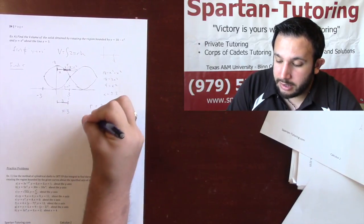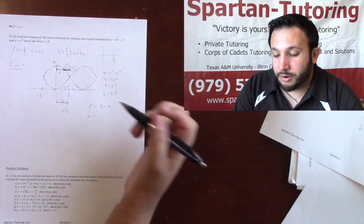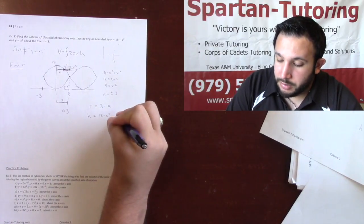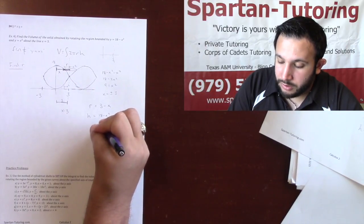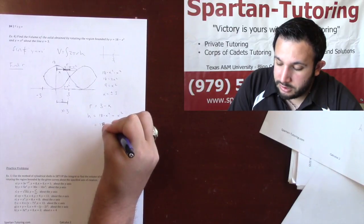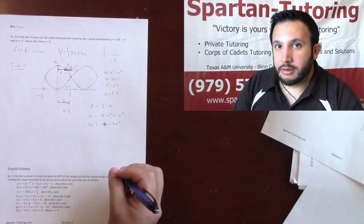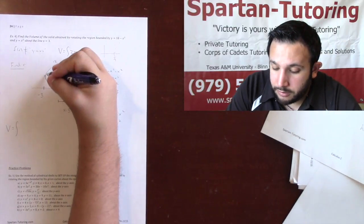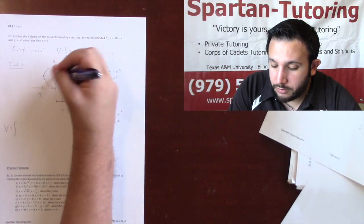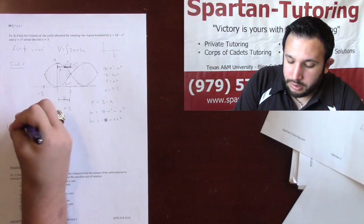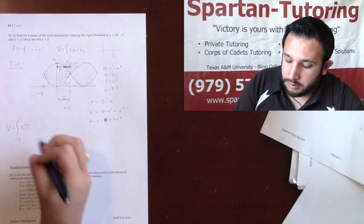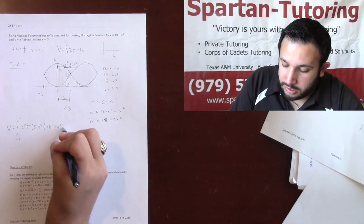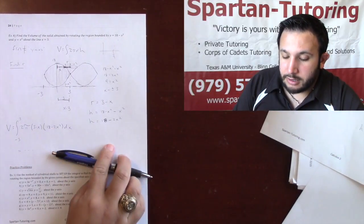For h: top minus bottom. From the sketch, the top is 18 - x² and the bottom is x², so h = (18 - x²) - x² = 18 - 2x². Now that I have r = 3 - x and h = 18 - 2x², I can set up the integral. Volume = ∫ from -3 to 3 of 2π · (3 - x) · (18 - 2x²) dx. And this is how you deal with cylindrical shells.